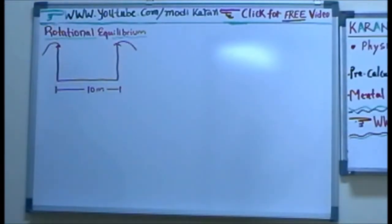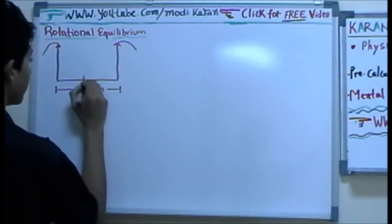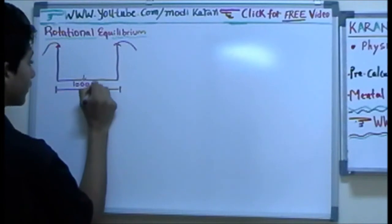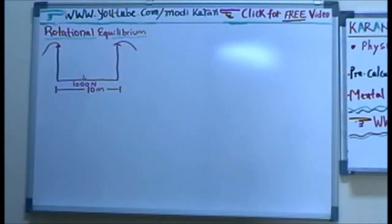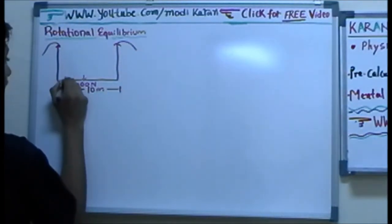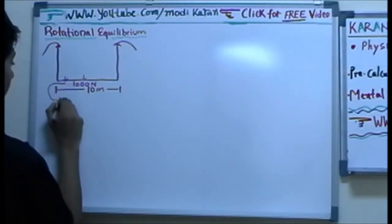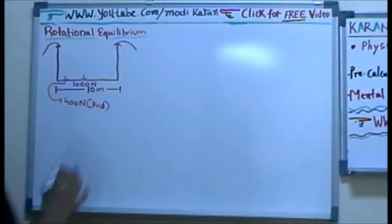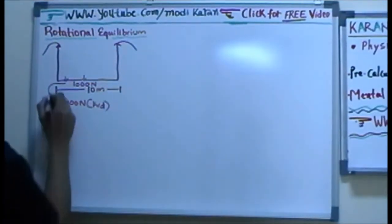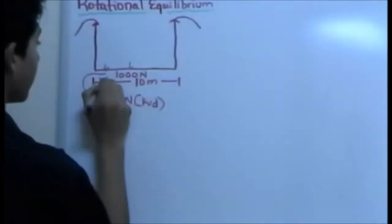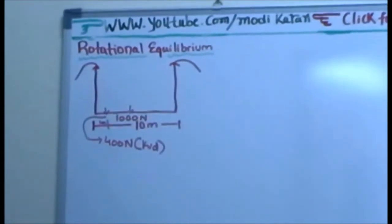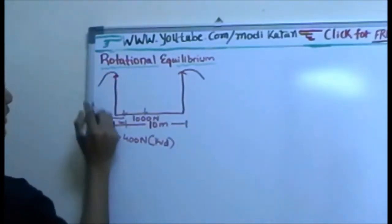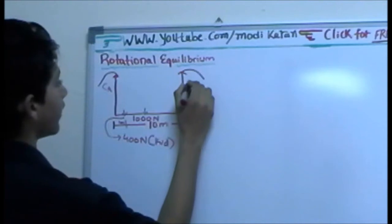The stage weighs 1000 N, so it's putting pressure downwards — 1000 N. The problem also says a person is standing on it, adding 400 N. And they're standing one meter apart from the end, so this is basically 1 meter over here. We need to find the tension, so let's say this side is being pulled up by crane A and this side by crane B.